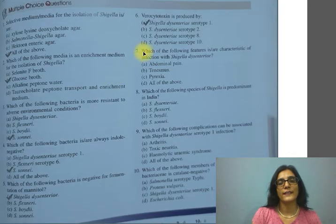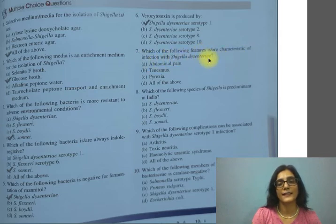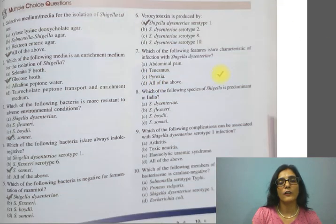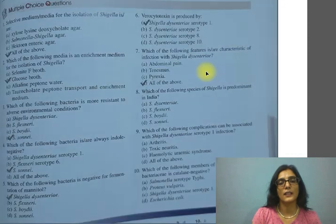Question 7: which of the following features is characteristic of infection with Shigella dysenteriae? A) Abdominal pain, B) Tenesmus, C) Pyrexia, D) All of the above. All of these are seen in dysentery when there is an infection with Shigella dysenteriae, so the correct option is D.